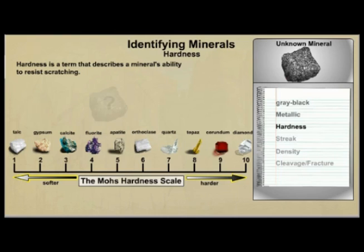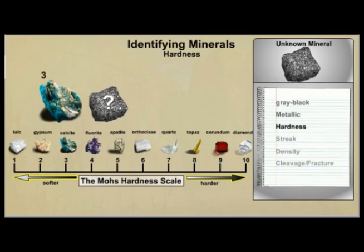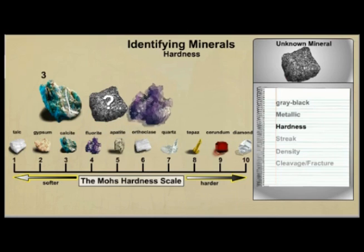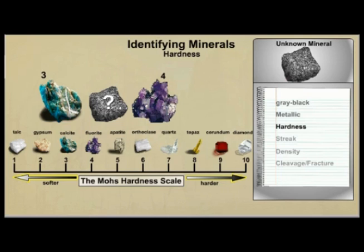For example, if an unknown mineral scratches a reference mineral with a hardness of 3 but won't scratch a mineral with a hardness of 4, its hardness is less than or equal to 4. Minerals of the same hardness will not scratch each other. If the sample is scratched by a reference mineral with a hardness of 4, the unknown mineral has a hardness below 4, somewhere around 3.5.